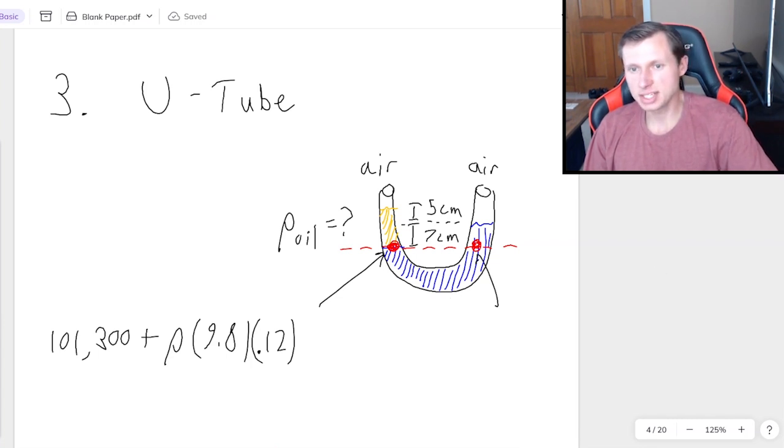And then the pressure at this red dot, that's going to be, again, for air, 101,300, plus rho GH this time is going to be, rho is 1000, G is still 9.8, but the height is not as high as before. It's just the 7 centimeters right here of the water, which is 0.07. And once again, I am going to set these two equal to each other, because the pressures are equal.